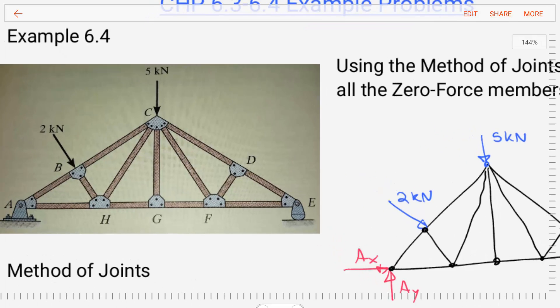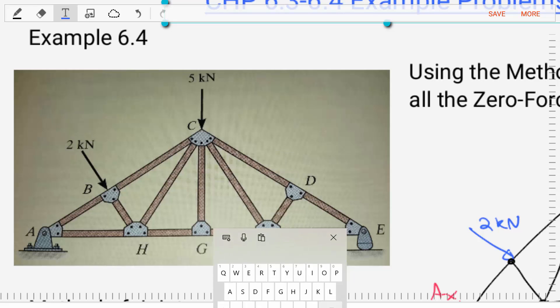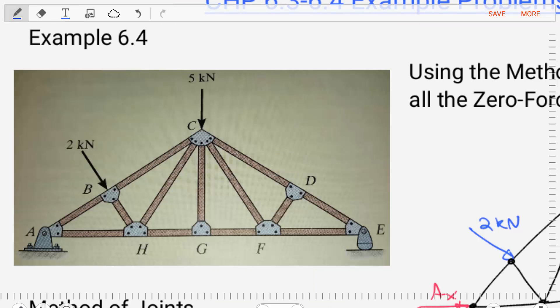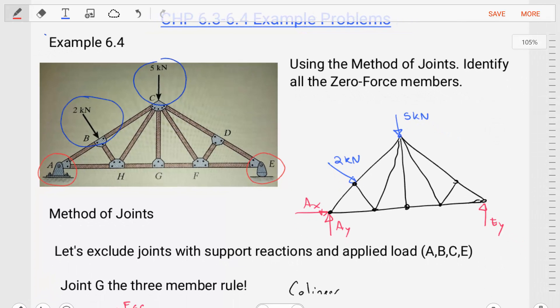Let's start by looking at the structure that we're given and identifying what are some things that we know, what are some things that we don't know. We can immediately see that we have some applied loading at point C and at point B. We also see that we have some support reactions at A and E. So those are all locations that we have some level of information about.